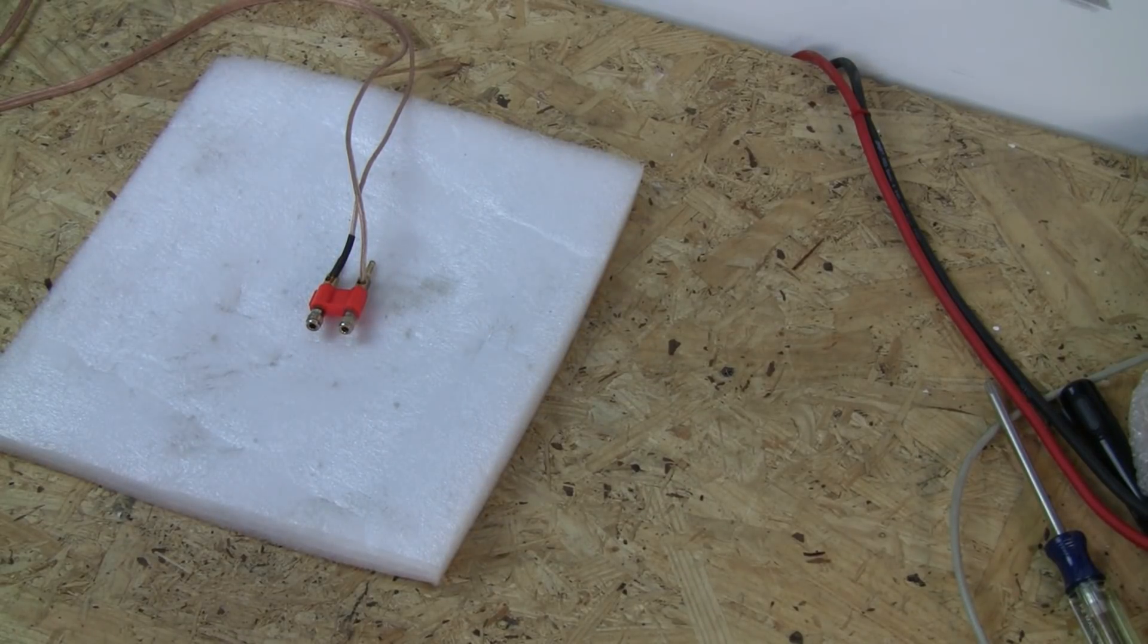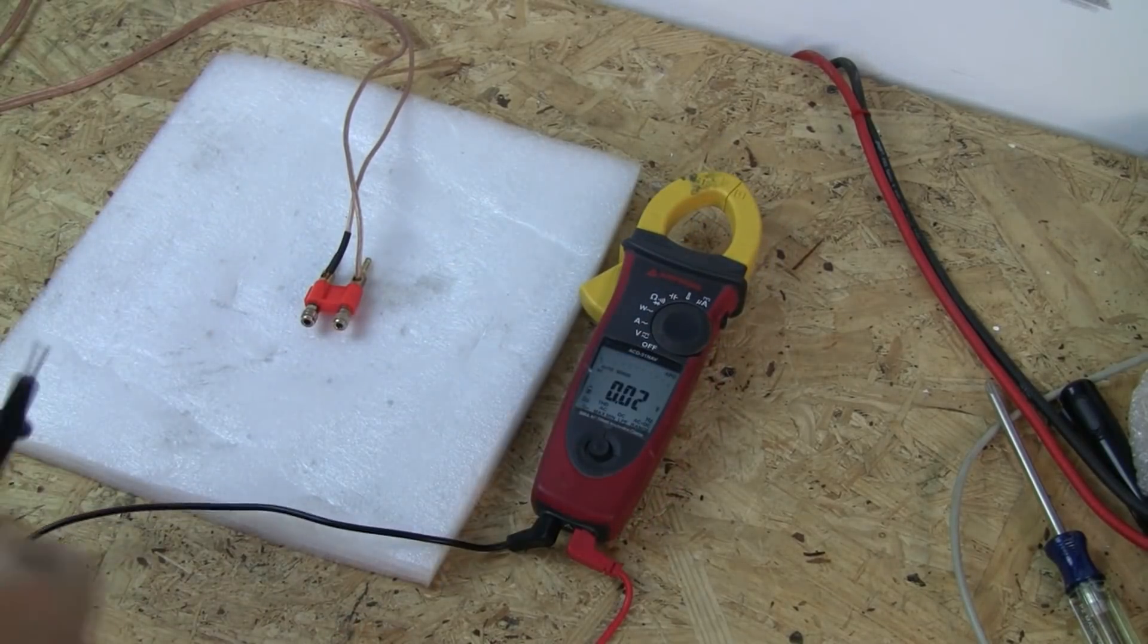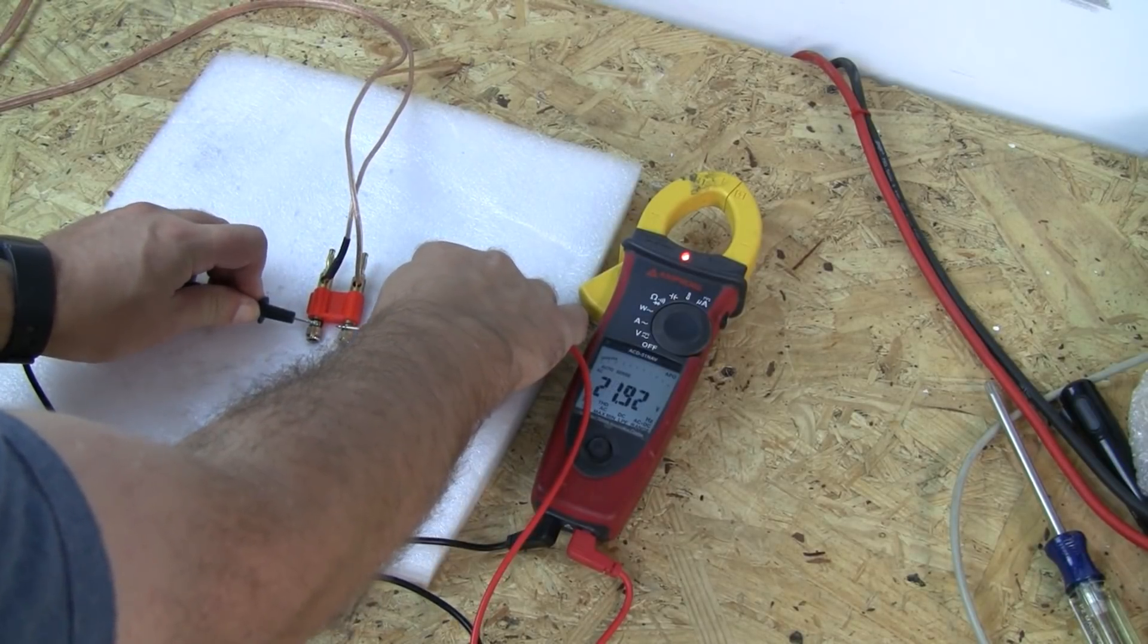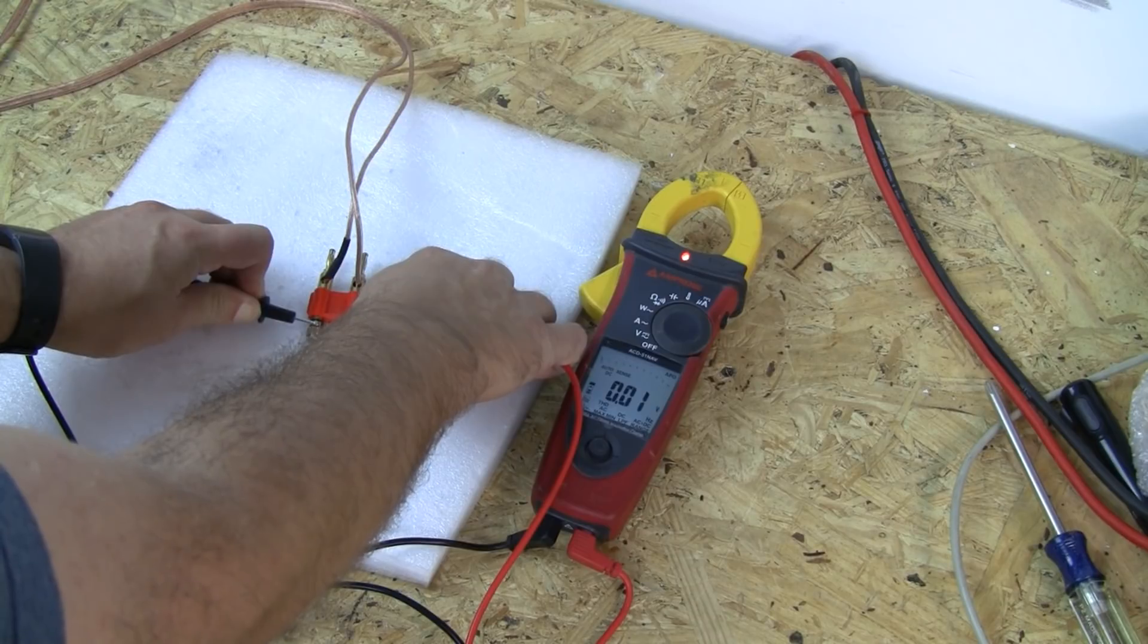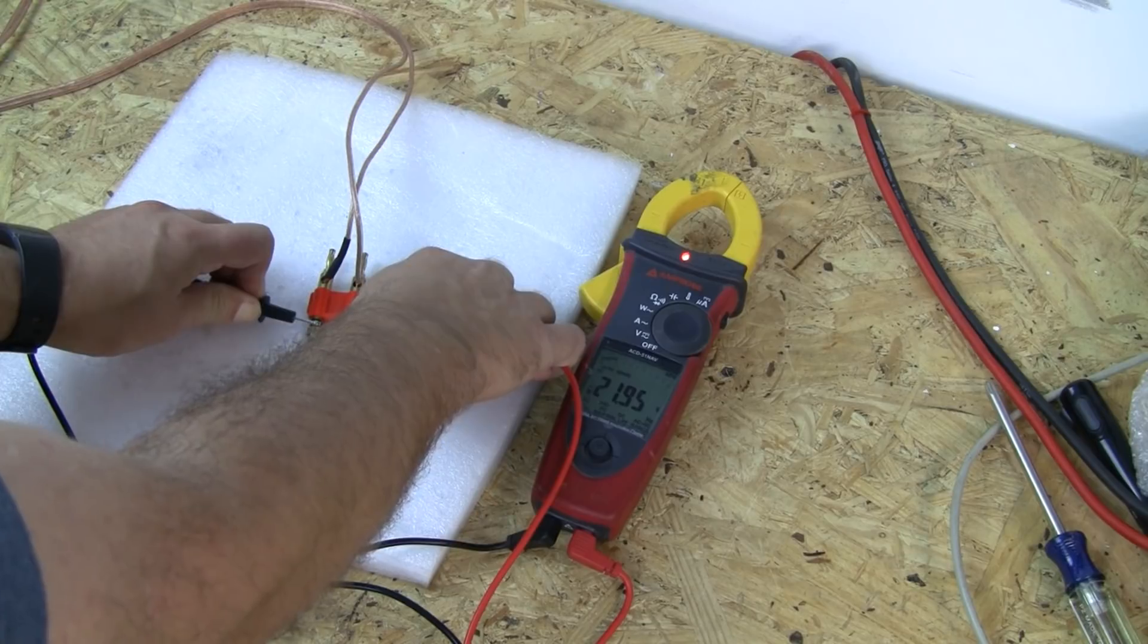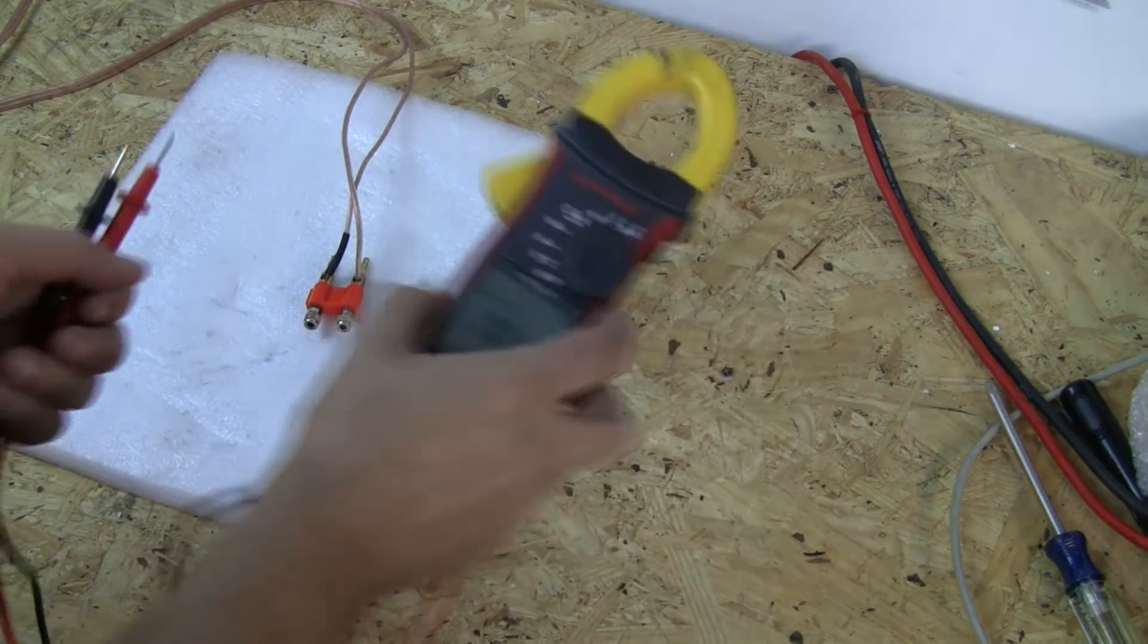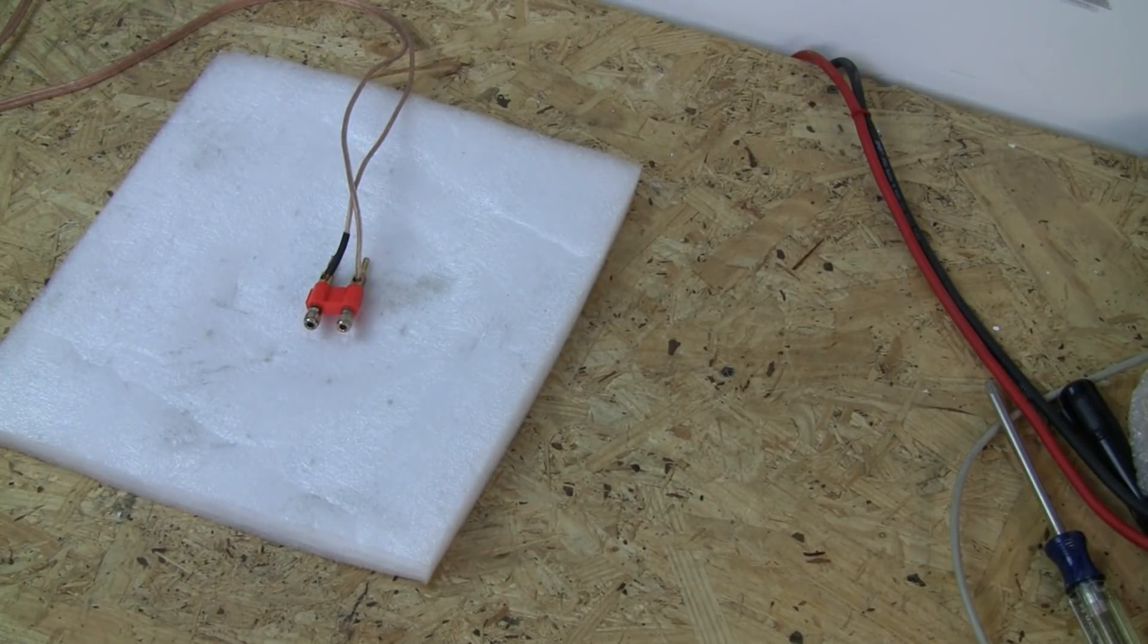And we'll try the Amprobe. This one is auto-ranging, so we only set it to voltage. This one is reading slightly higher, 21.95. And this one is a true RMS, which is why there was no variation like on the Fluke.